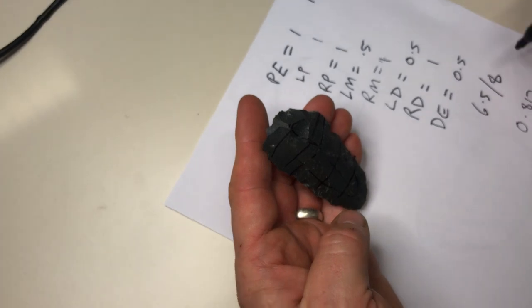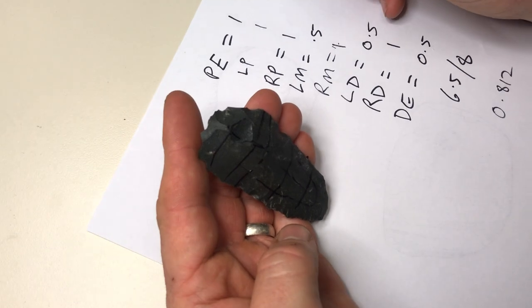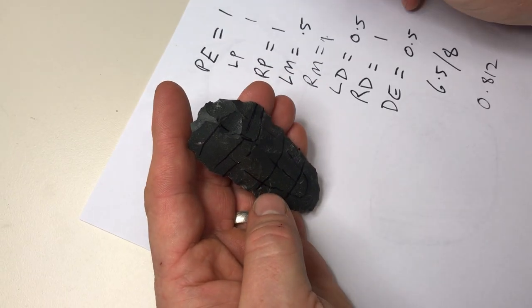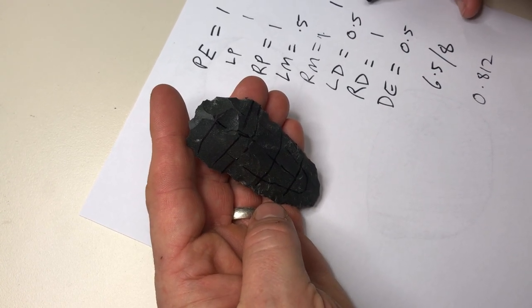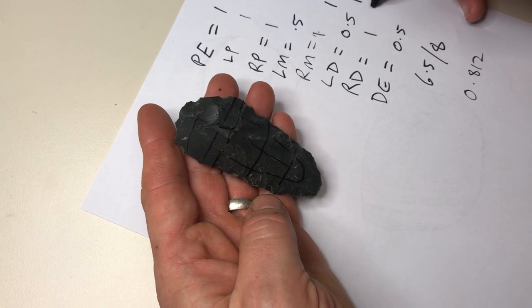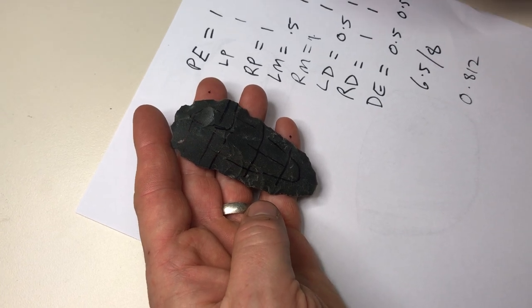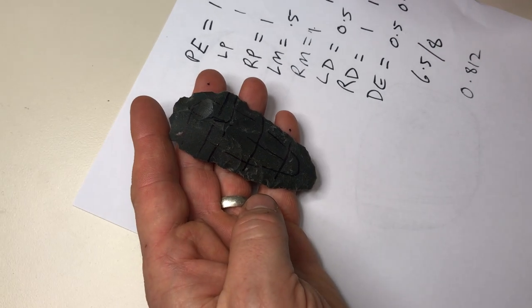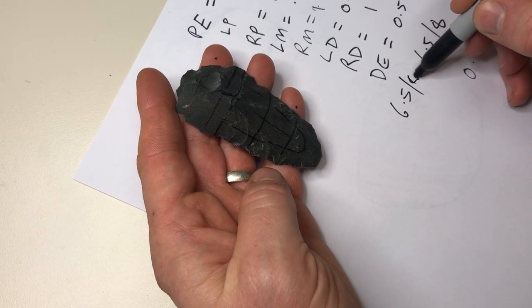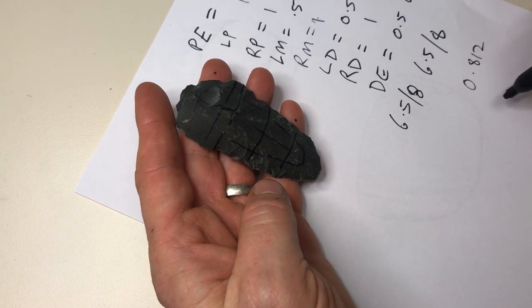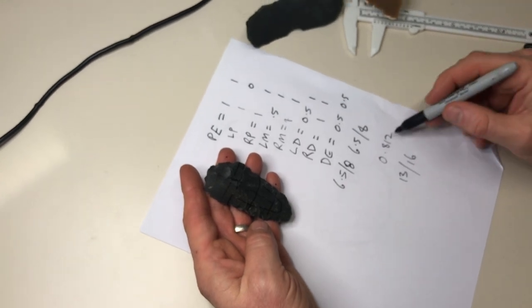Okay, proximal end has a score of 1, left proximal a score of 0, right proximal 1, left medial 1, right medial 1, left distal 1, right distal 1, and distal end probably 0.5. So here we add those up: 1, 2, 3, 4, 5, 6, 6.5 again. So we know now that if we add those two scores up we get 13 out of 16, which should also give us 0.812. Yes, 0.812.